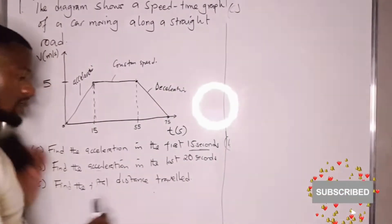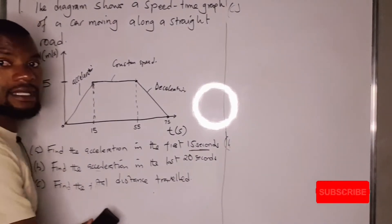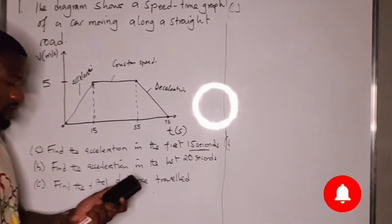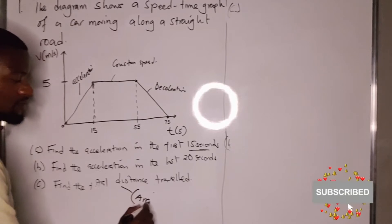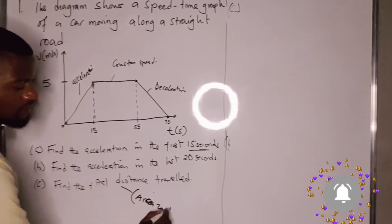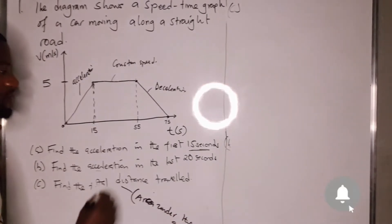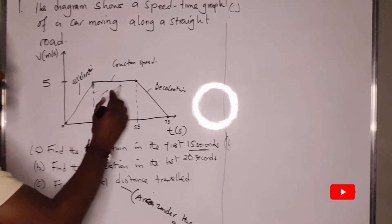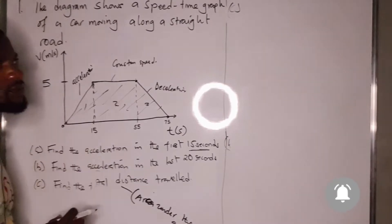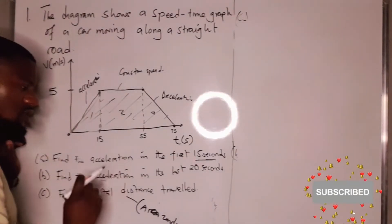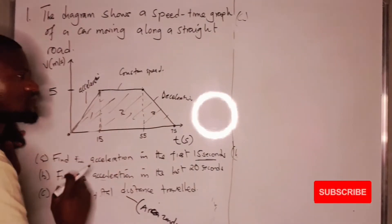Part C asks us to calculate the total distance traveled. The total distance is the area under the graph. To calculate this, we split the graph into three parts.